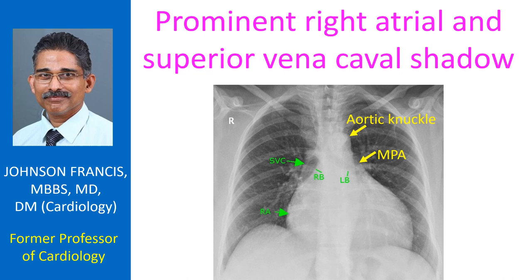The right bronchus can be seen as a more vertical air column than the left bronchus, which is more horizontal. In general, the vascular markings in the lung are a bit more prominent than usual.